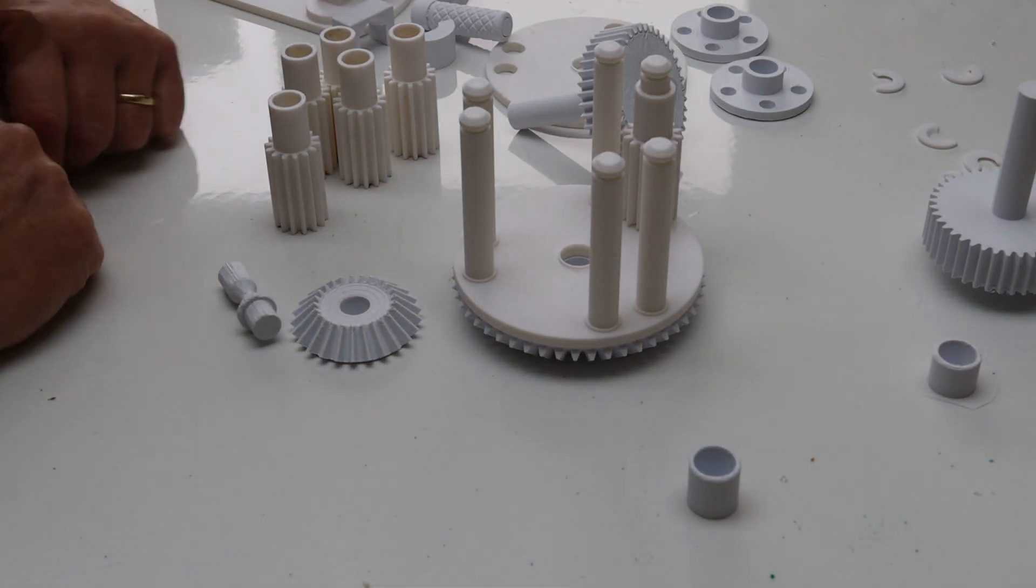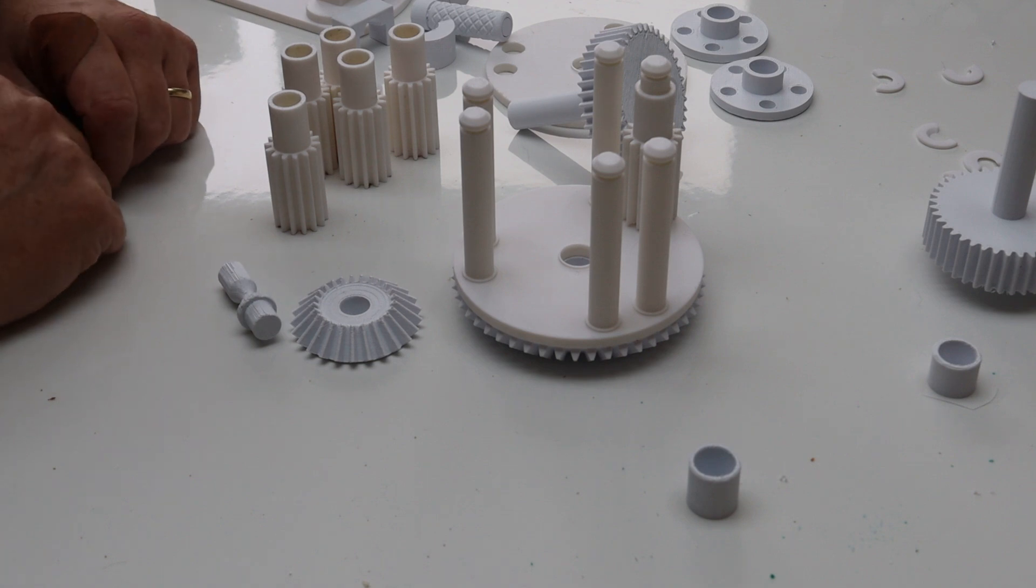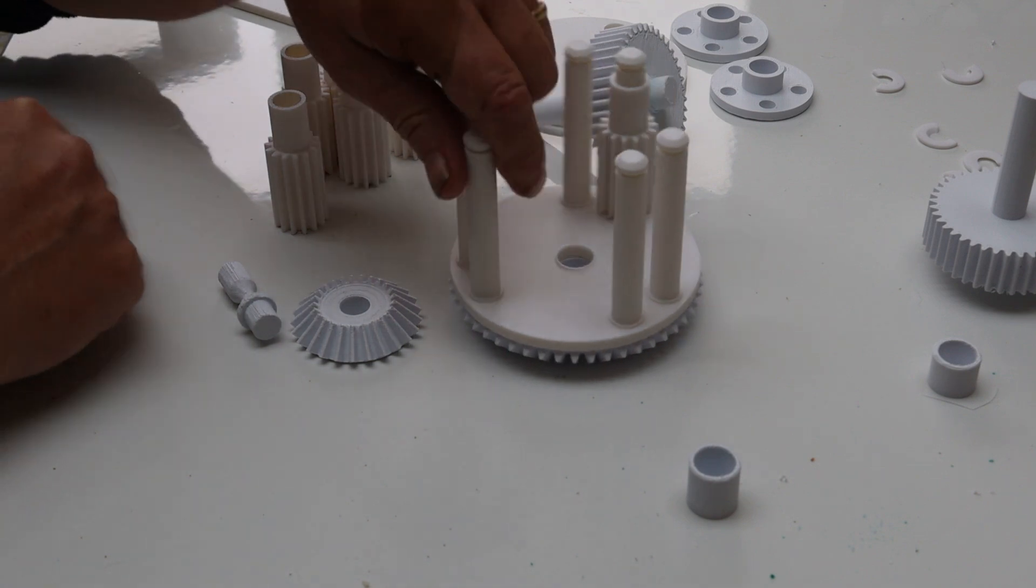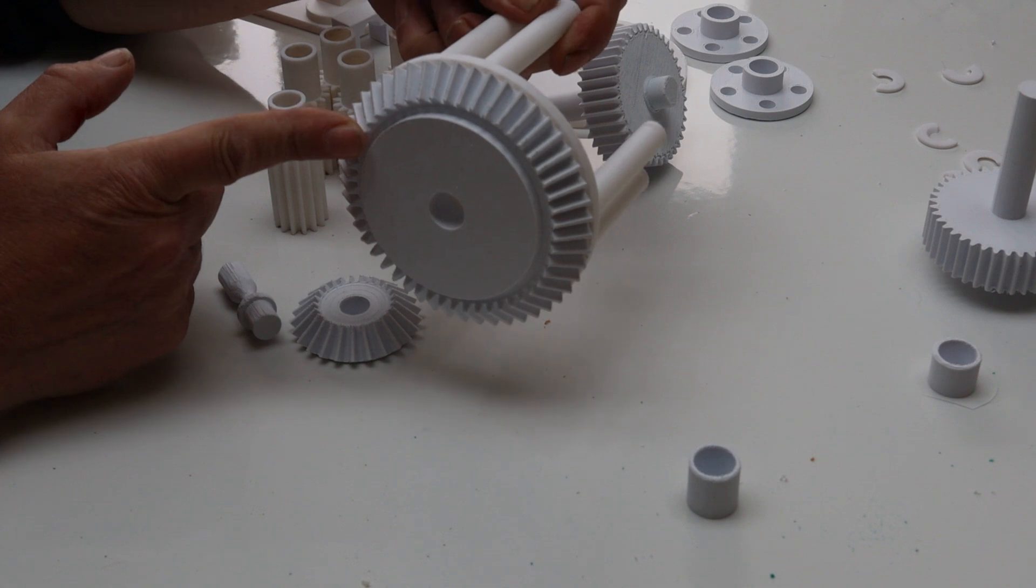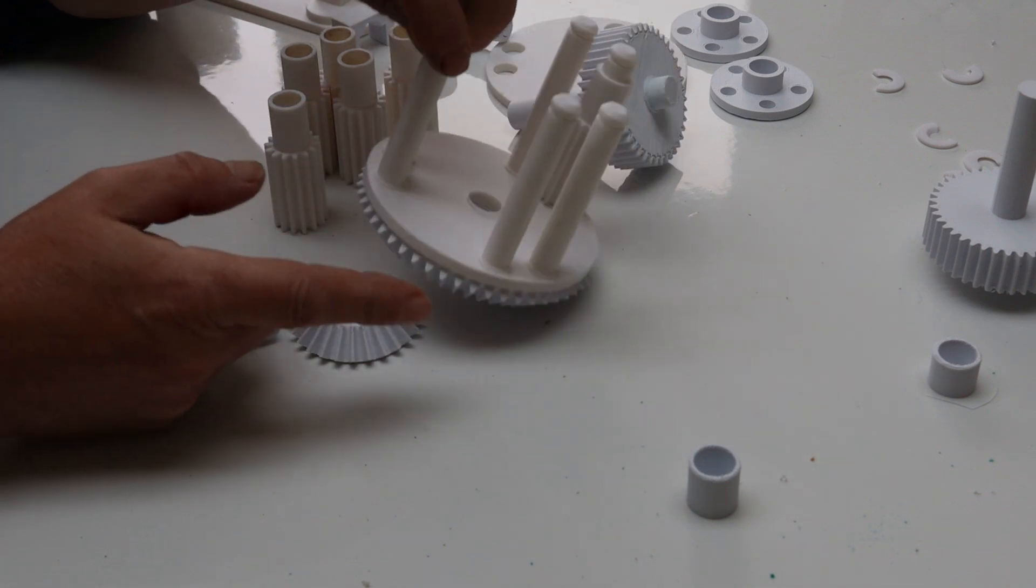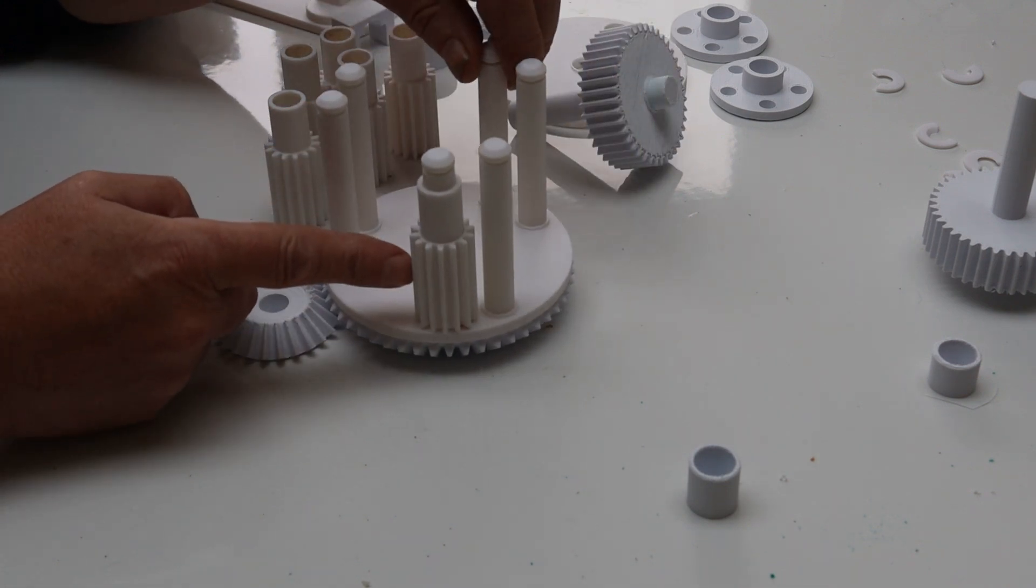Once we've printed it, there are the parts. Now to put this together is pretty much exactly what we saw in the animation. There's the main carriage, and I've glued the bevel gear, the large bevel gear, onto the bottom of the main carriage, and put one of the Spur gears on there.